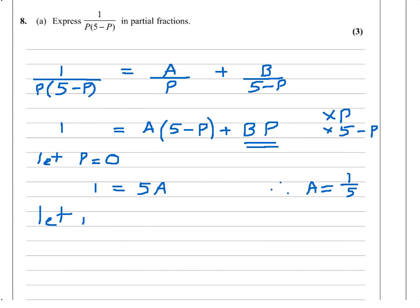If we let P equal 5, that will obviously get rid of this bracket here. So we'd end up with 1 equals, well the A would disappear and we'd simply have 5B. So B also equals a fifth.